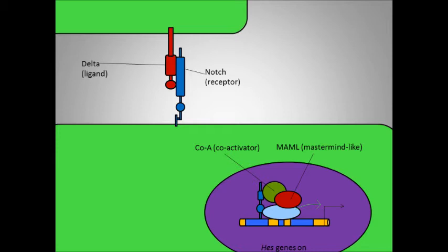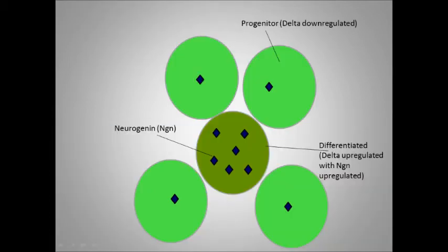In turn, HES influences the expression of transcription factors that are involved in the differentiation of neural cells, one of the most important being bHLH neurogenic factors. An example of bHLH neurogenic factors is Neurogenin, or NGN.